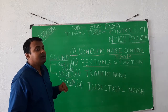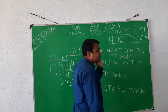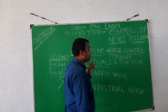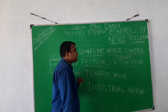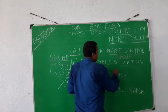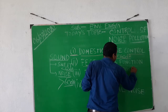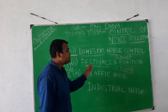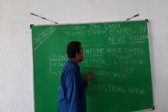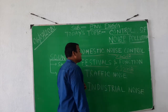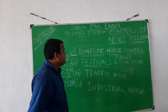The second point is festival noise control. We have seen different types of loudspeakers at festivals. The loudspeaker sound system should be maintained at less than 60 decibels, and also less than 100 decibels for festival functions and different types of meetings.